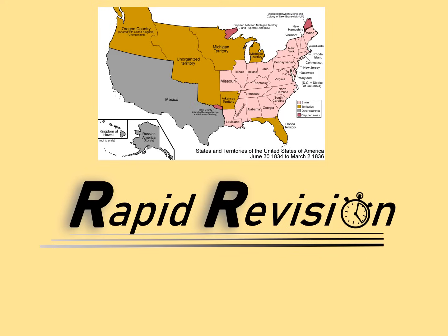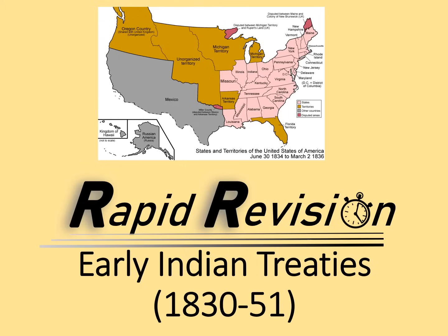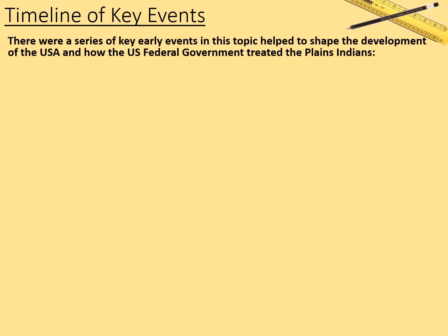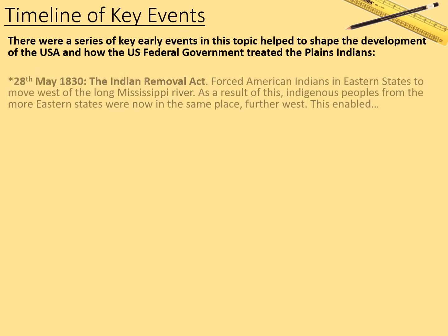Welcome to this rapid revision session on Early Indian Treaties 1830 to 1851. This is a pretty chewy topic which takes a little bit of time to get your head around. I'm only going to give you the very basic details here — you might want to do some more detailed revision independently. There were a series of key events in this topic that helped shape the development of the USA and how the US federal government treated the Plains Indians.